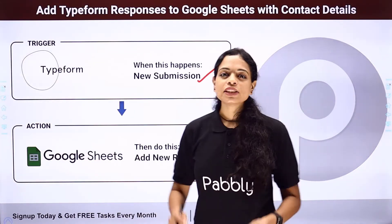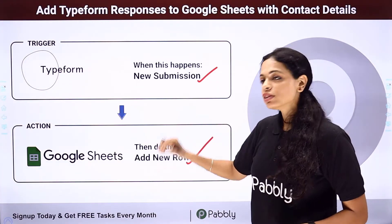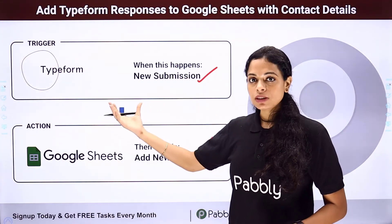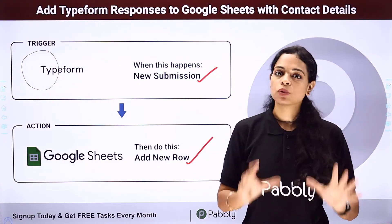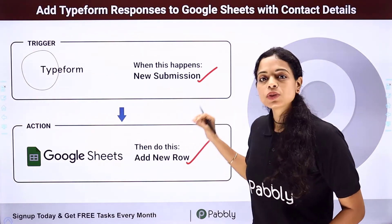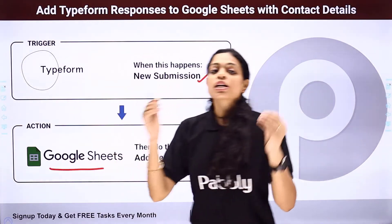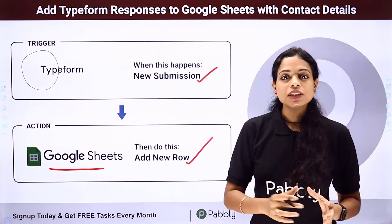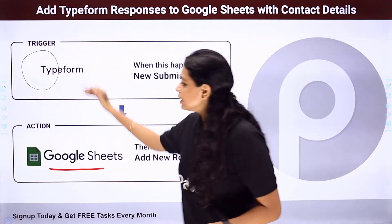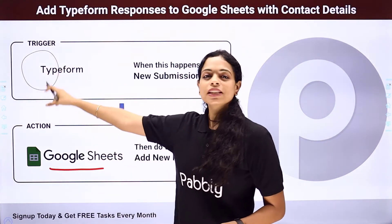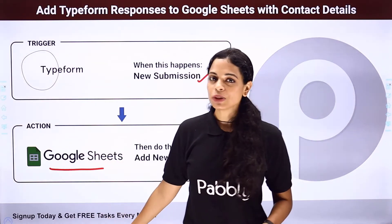Now let's say you are using Typeform as a form builder application. Every time you receive a new submission with client and contact details, you want these details of your new leads to be part of your Google Sheets so that you can track and nurture them later. This is possible by integrating these two applications — Typeform as your trigger application and Google Sheets as your action application.